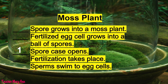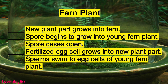For moss reproduction: number one, spore case opens; number two, spore grows into a moss plant; number three, sperm swim to egg cells; number four, fertilization takes place; and number five, fertilized egg cell grows into a ball of spores.